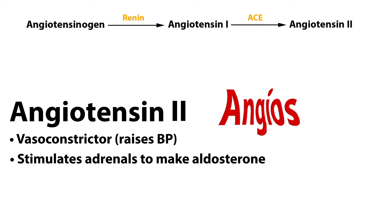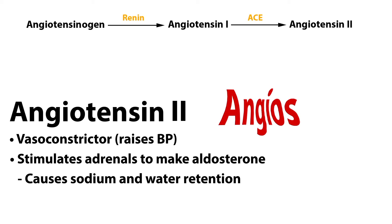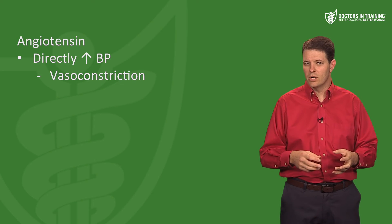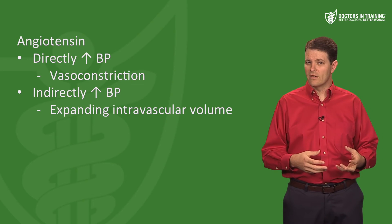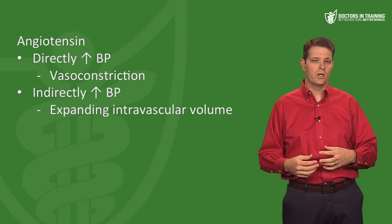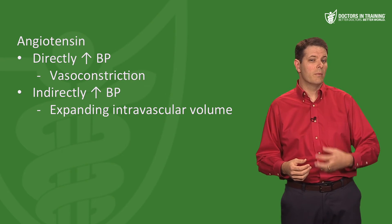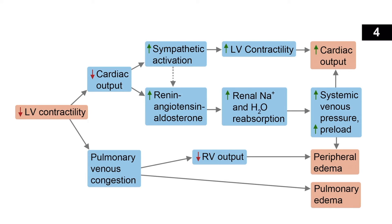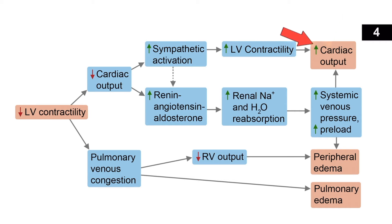Aldosterone stimulates reabsorption of sodium and water in the kidney. So angiotensin II directly raises blood pressure through vasoconstriction and indirectly raises it by expanding intravascular volume through aldosterone secretion and increased sodium and water retention — more of a long-term response to low blood pressure.